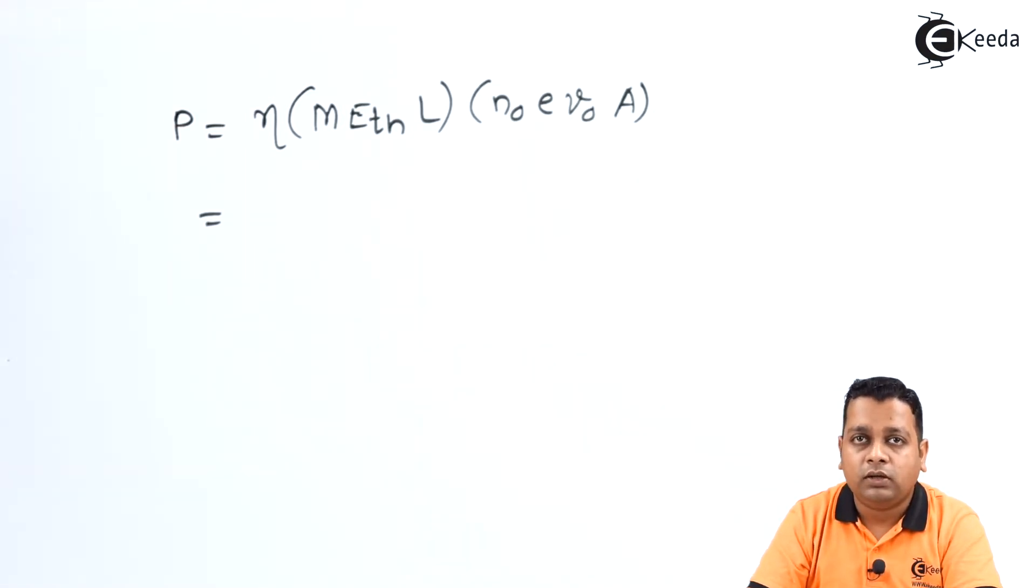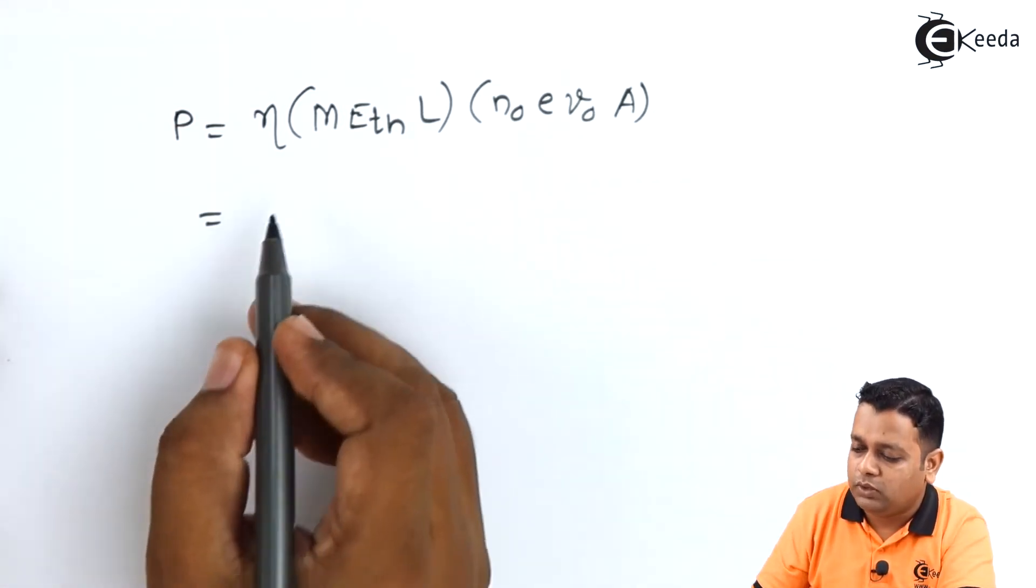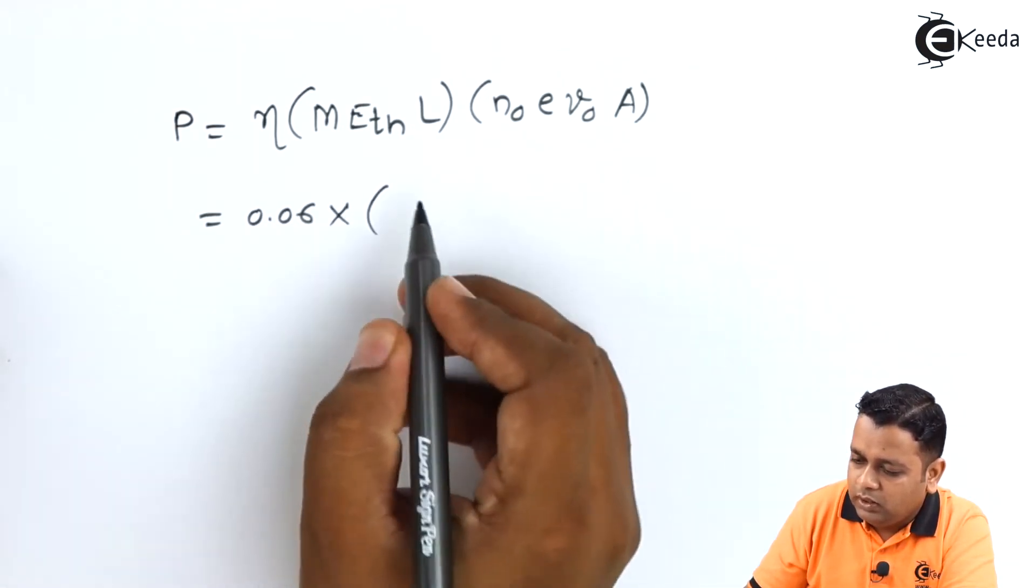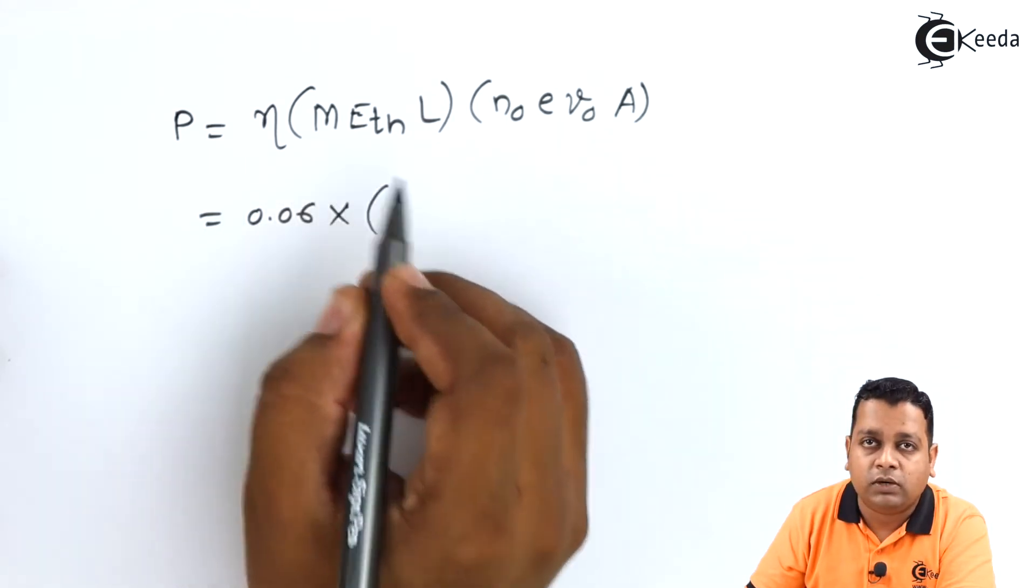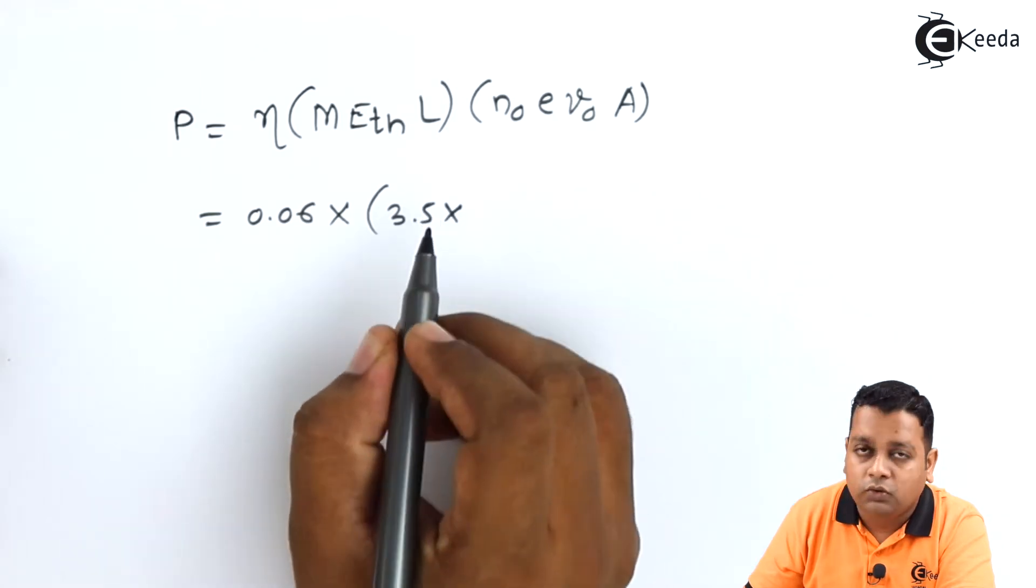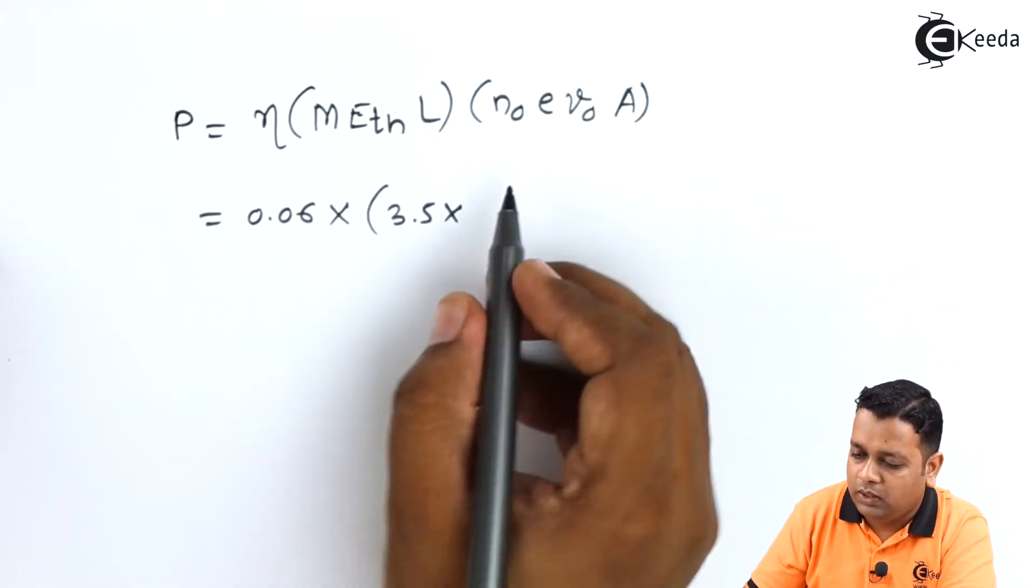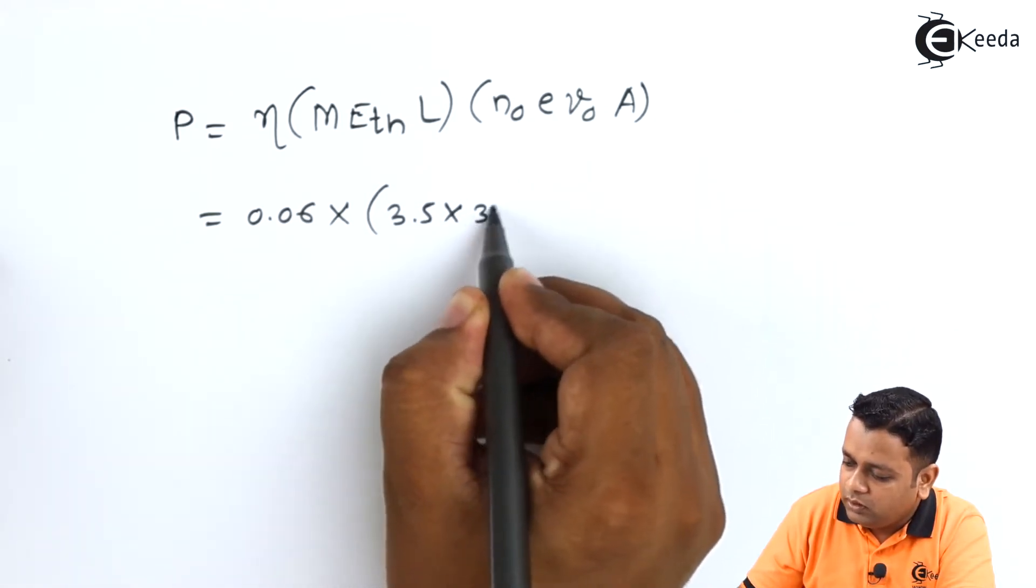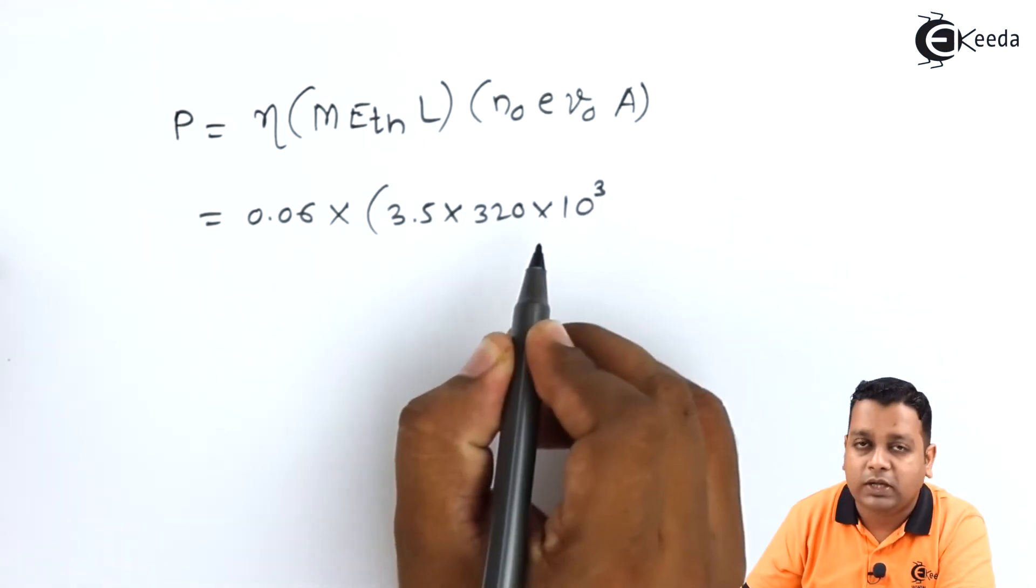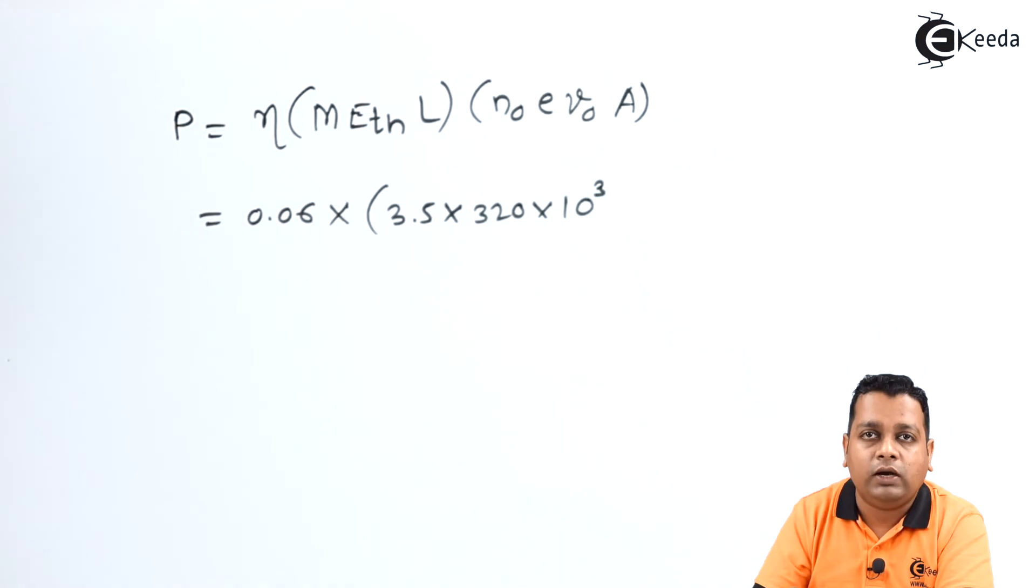Very first, conversion efficiency we substitute eta as 0.06. In the bracket we can substitute the multiplication factor that is 3.5 into the threshold value of electric field, here it is 320 into 10 raised to power 3 in place of kilo, so that the value can be in terms of SI system of units.